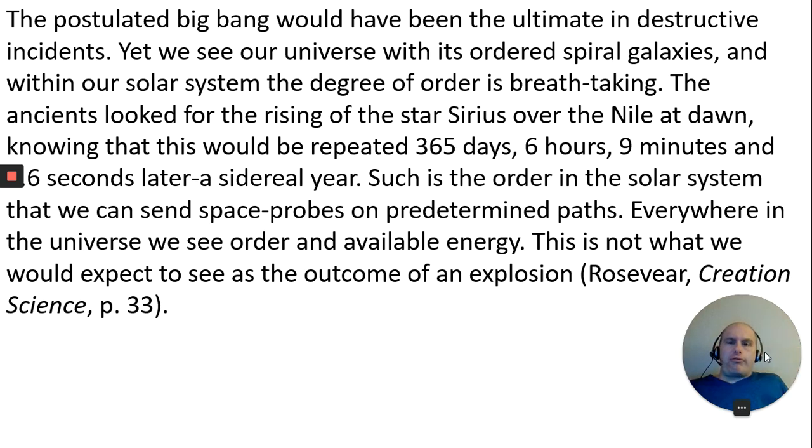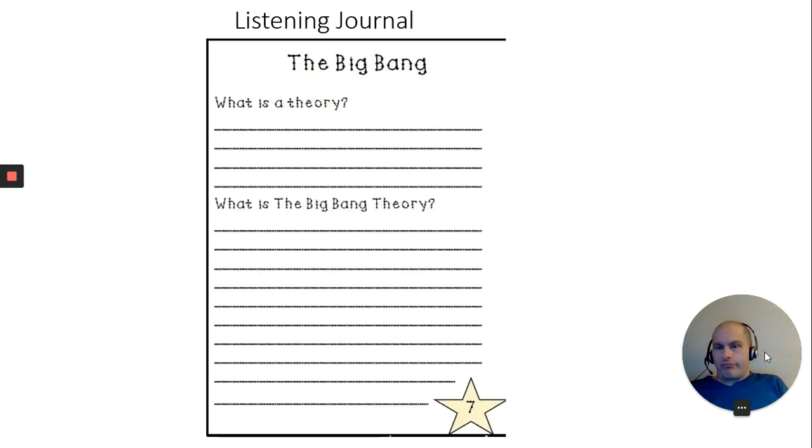So, the Big Bang theory would have been the ultimate in destructive incidents. Our universe is ordered by spiral galaxies within our solar system to a degree that is breathtaking. Like I said before, we can tell where the planets are going to be. We can tell where the moon is going to be years from now just based on observation and calculations from where they've been. Even back in the Egyptians, thousands of years ago, like 4,000 years ago, could tell you there was going to be 365 days based on where the stars were every year. This is nothing new. This has been going on for thousands of years. So, the stars and all that stuff have been in the same place for thousands of years. It's pretty amazing.